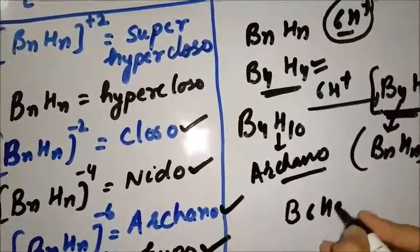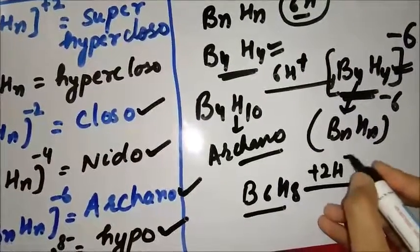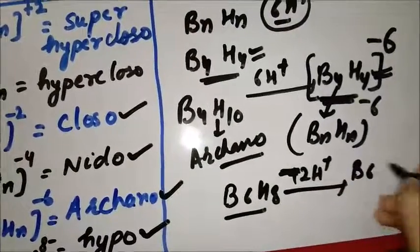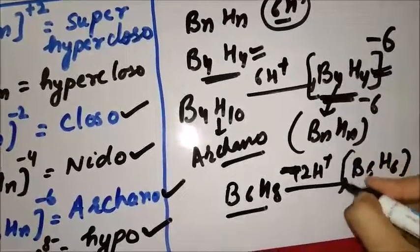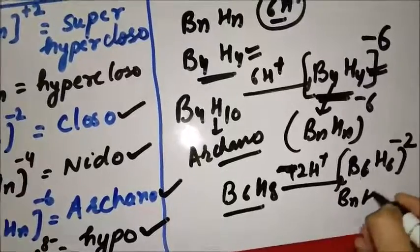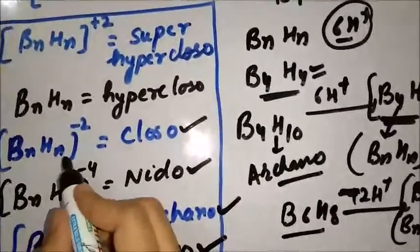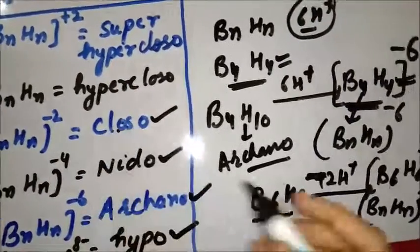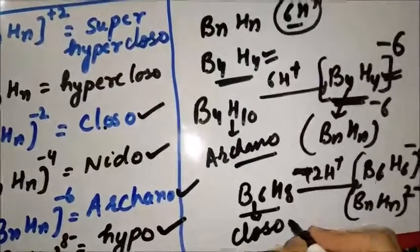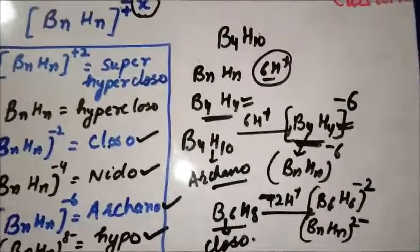Next example is B₆H₈. What you do is release 2 H⁺. We get B₆H₆ with 2 negative charge, meaning this is of type BₙHₙ²⁻. BₙHₙ two negative will give you the nomenclature closo. So the nomenclature for this is closo. This is the way to calculate the Wade nomenclature for borane clusters.